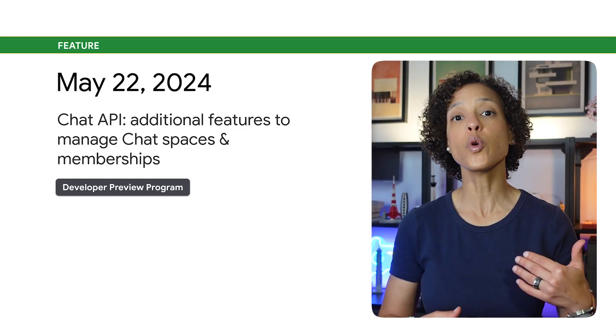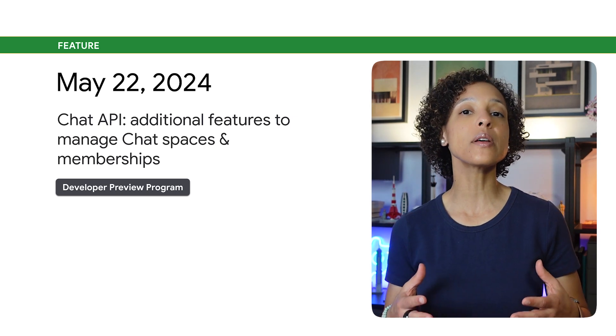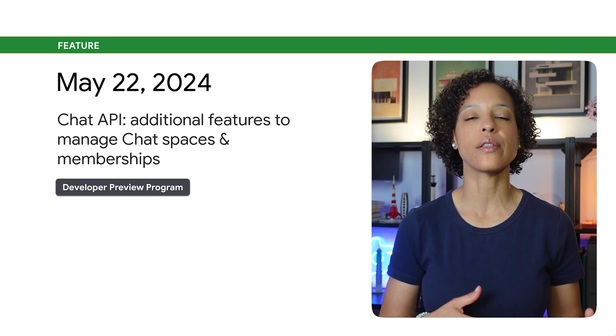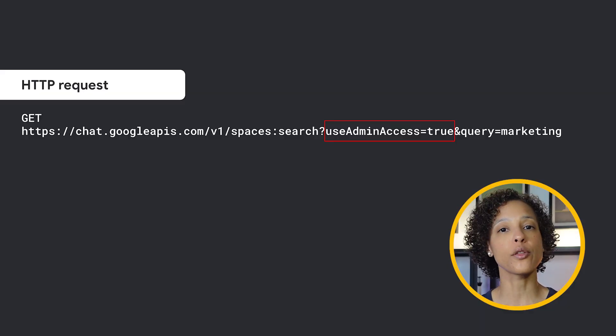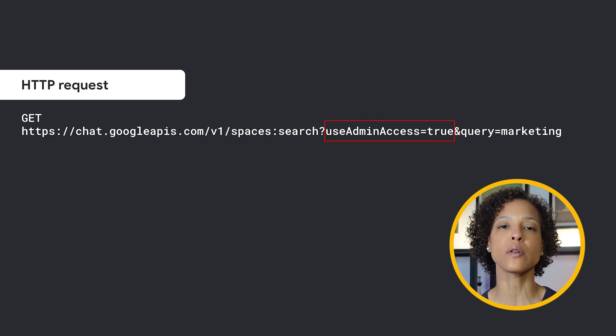Through the Developer Preview Program, we have added additional features to the Chat API that enable administrators to efficiently manage Google Chat within their organization. As the admin, you can use the Chat API to search and delete spaces, list, create, and delete memberships. You can authenticate and authorize your calls to the Google Chat API with administrator privileges by setting the Use Admin Access field in the requests of applicable methods.